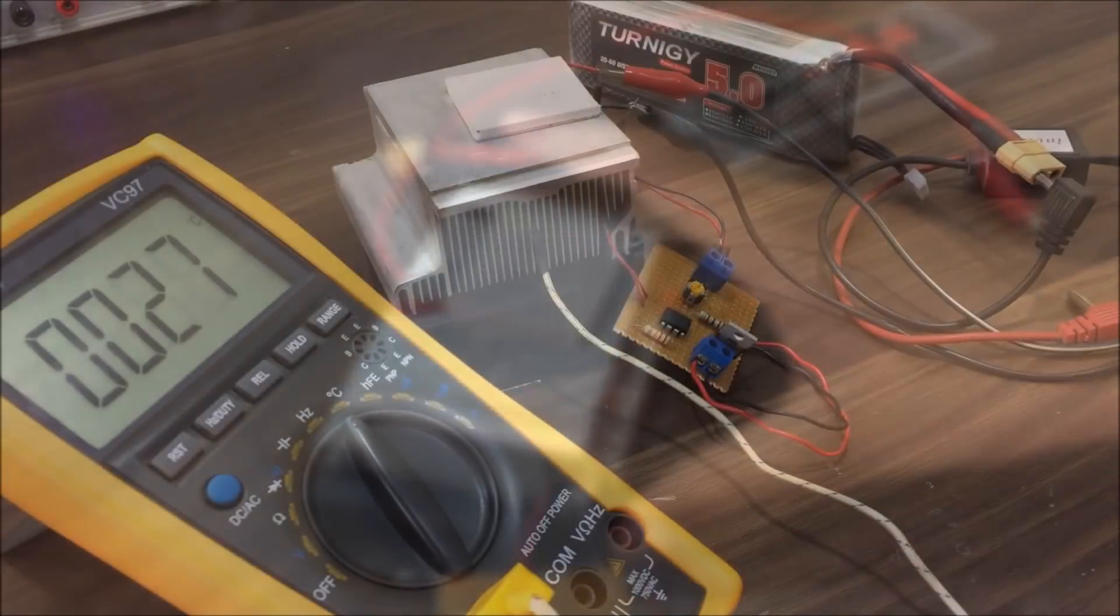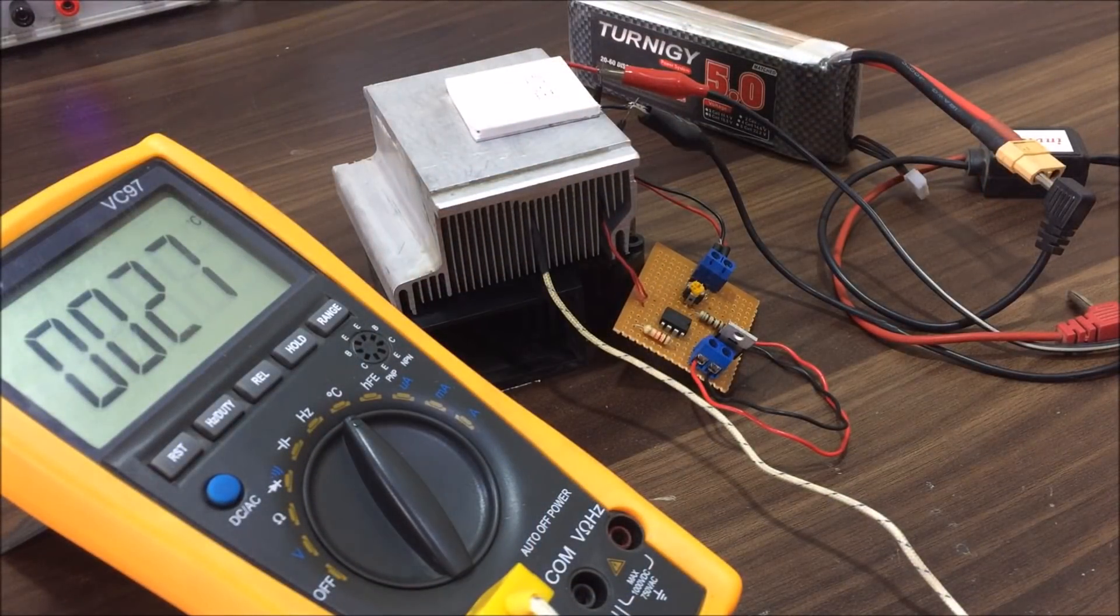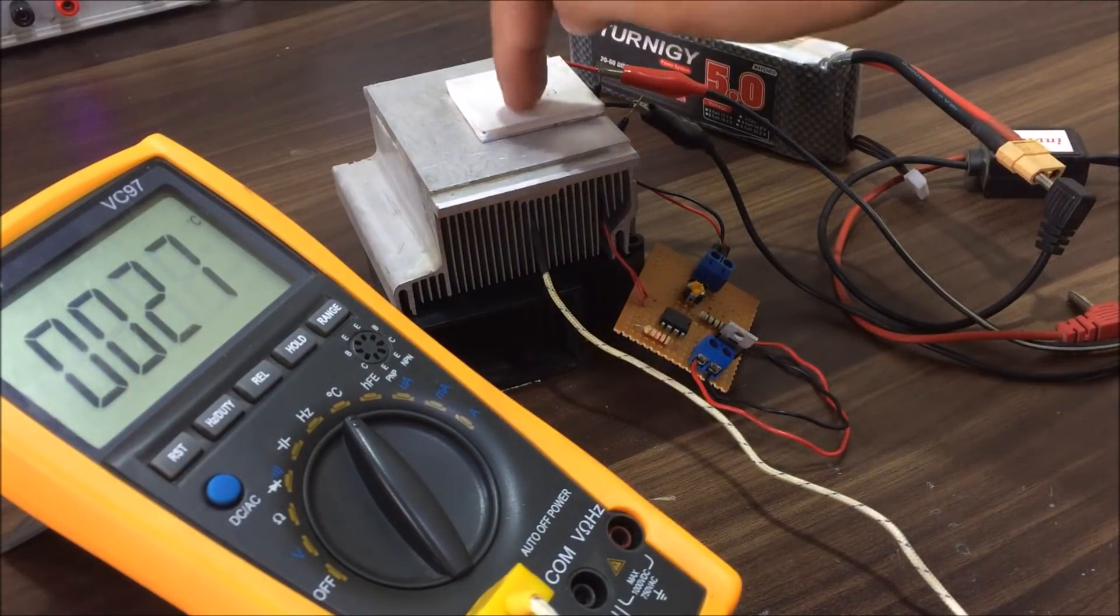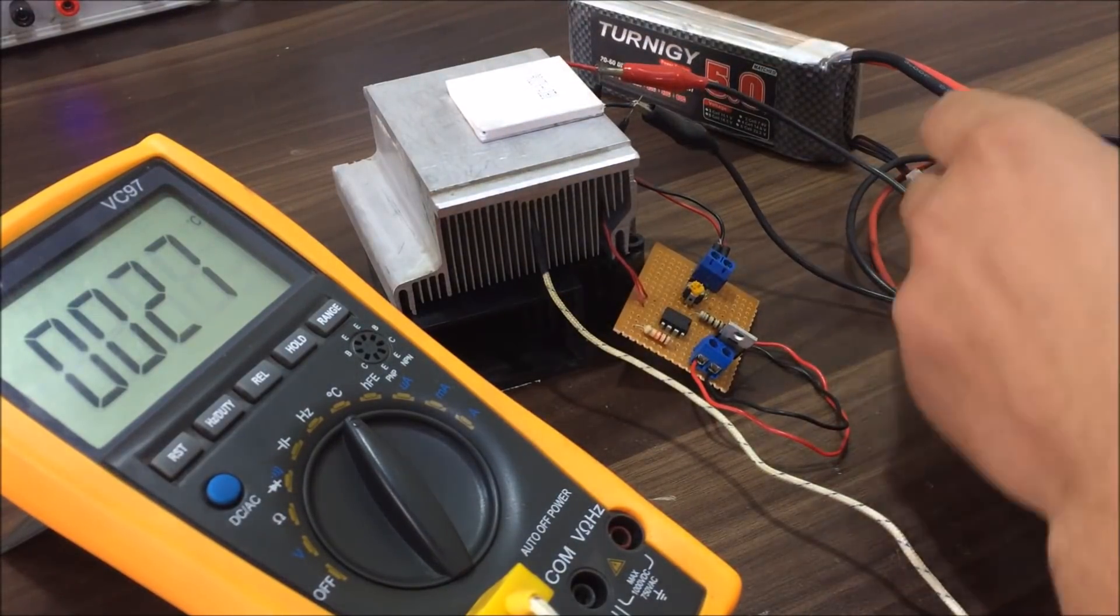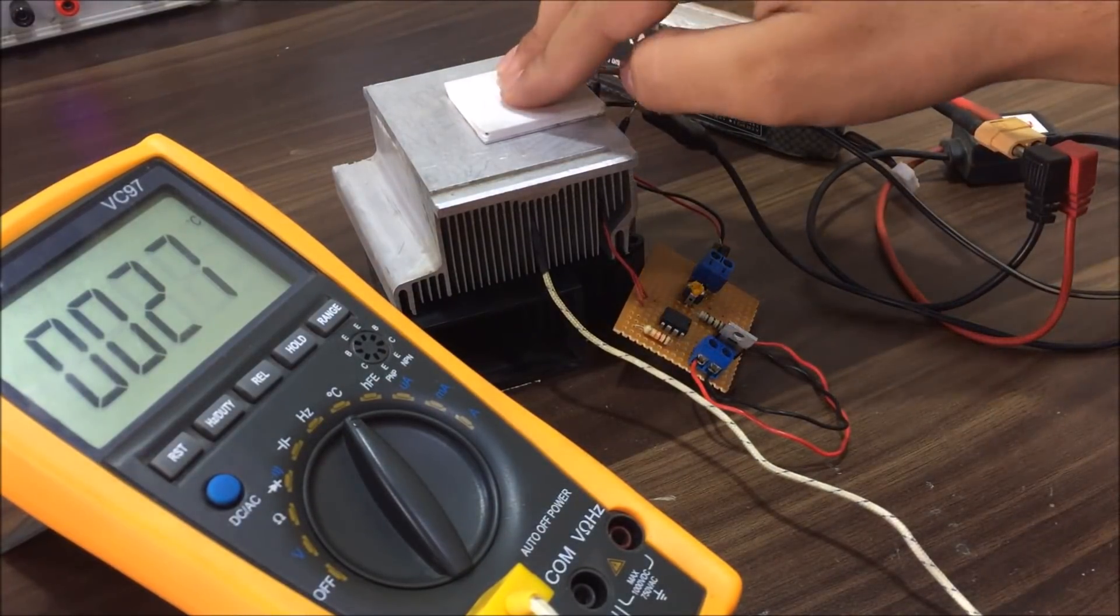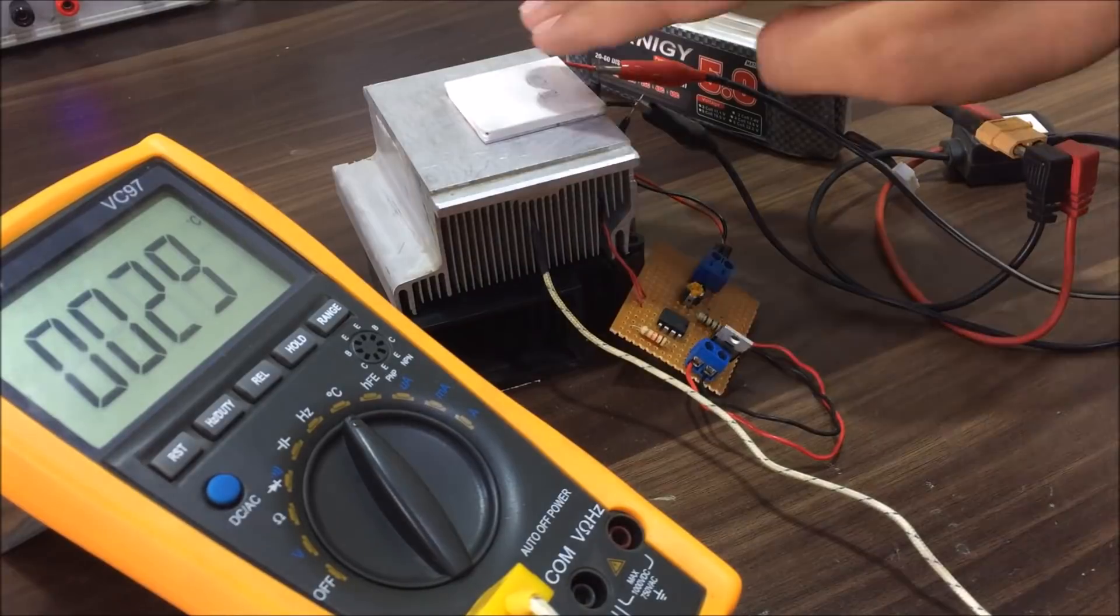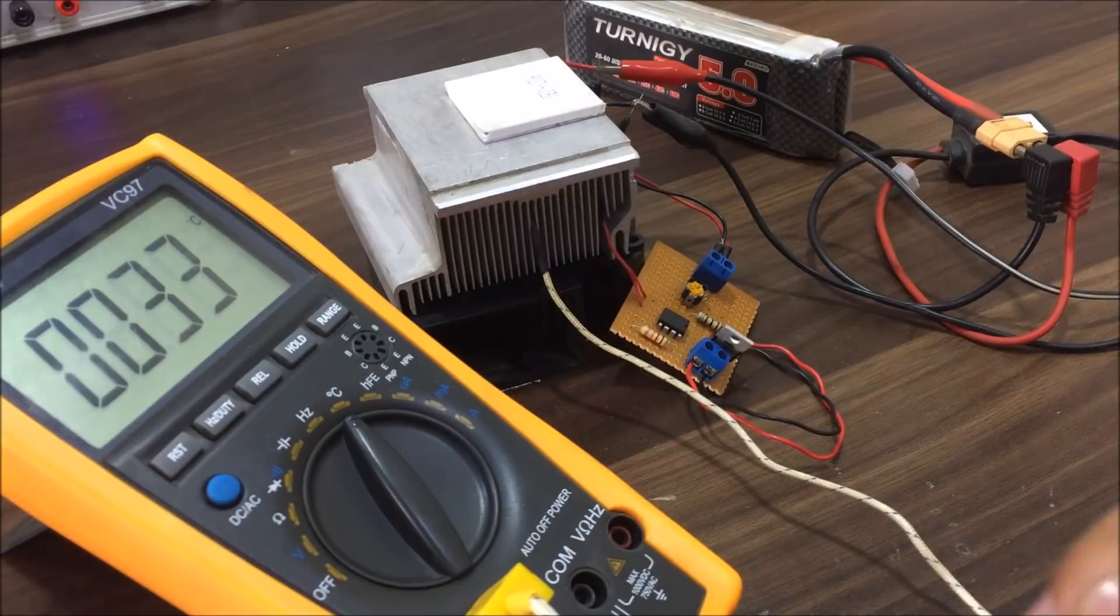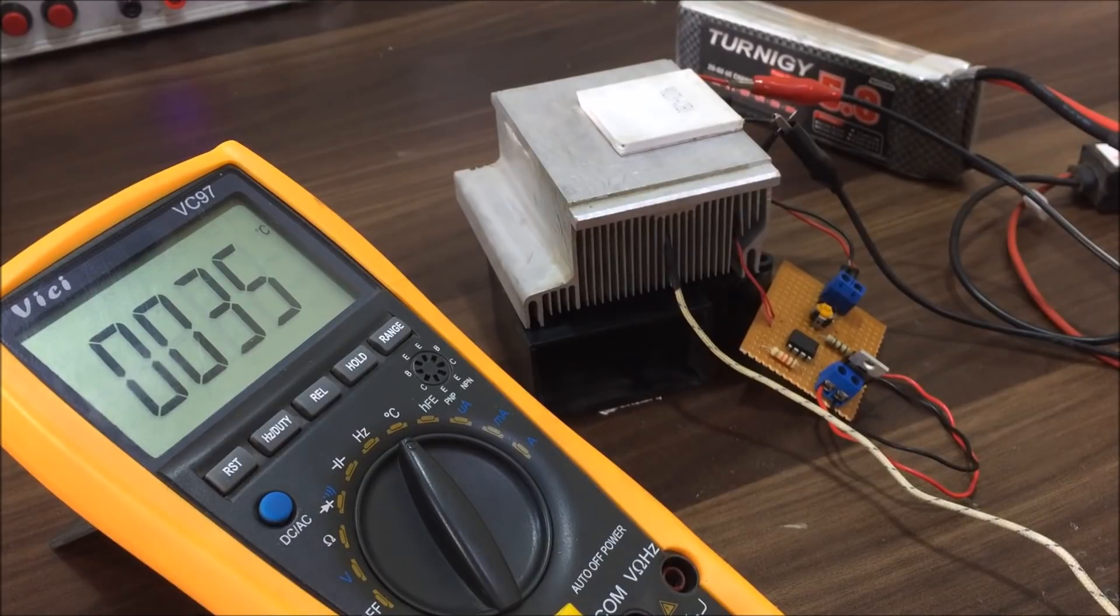Initially, as you can see that the temperature of heat sink is 27 degrees Celsius. Now, let's power the Peltier module with the help of a battery. As you can see that the temperature of heat sink is rising. I set the potentiometer so that it will start the fan at 40 degrees Celsius.